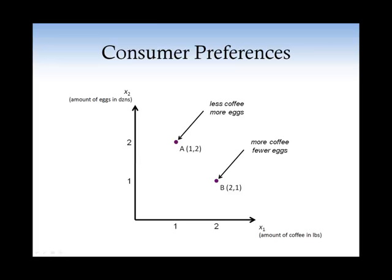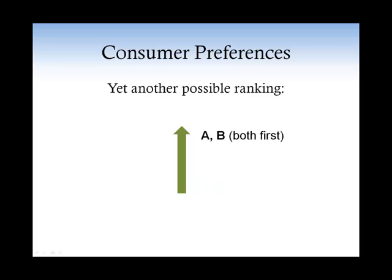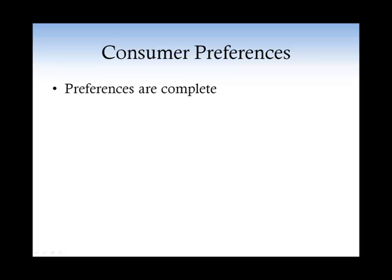What does it mean knowing Mary's preferences? It means that you know how she ranks these two baskets. We might know that Mary likes A better than B, or we might know that Mary likes A less than B. In fact, we also want to consider the possibility that Mary might like A as much as she likes B. The basic assumption that we make is that preferences are complete. This means that for any two baskets, a consumer always knows which one she likes better or if she likes them the same.